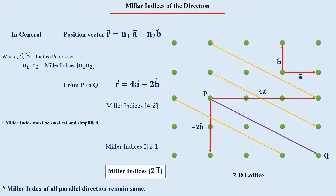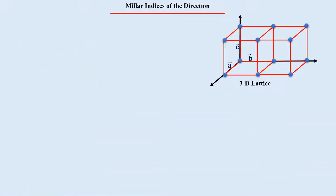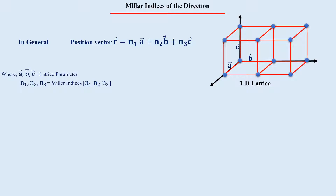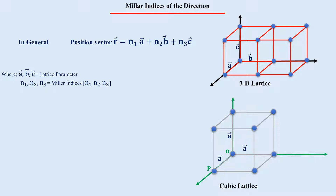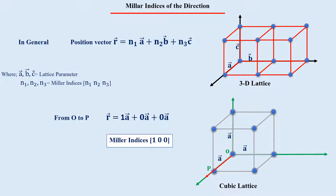In a 3D lattice with lattice parameters A, B, and C, the position vector between any two points is N1·A + N2·B + N3·C, where N1, N2, N3 are Miller indices. Taking a 3D cubic lattice with lattice parameter A, to write the Miller indices for the direction of lattice point P from origin O, the position vector is 1A + 0A + 0A. Hence, the Miller indices of this direction are [1 0 0].